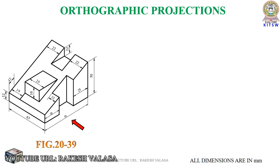Before going to draw any orthographic projections, we need to identify the front view. For every problem, there is one arrow mark direction and an X symbol. The X means observer, and the arrow indicates observer direction. So when the observer is standing and watching this side, this view is called the front view.